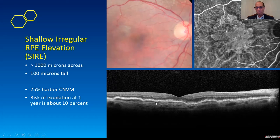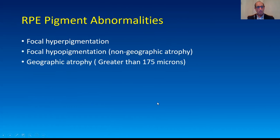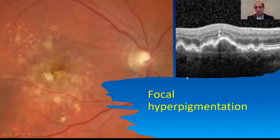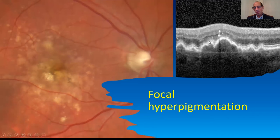RPE abnormalities: focal hyperpigmentation and focal hypopigmentation. The cutoff for geographic atrophy attributes is 175 microns. On an OCT, focal hyperpigmentation looks like little intraretinal hyperreflective spots. Here's a patient with big drusen or drusenoid PEDs, a little pigment spot, and on OCT you can see it. As far as we understand, that's RPE detaching — melanin migrating from the RPE into the retina. This is often a precursor of geographic atrophy.